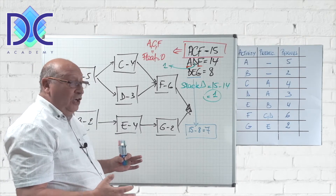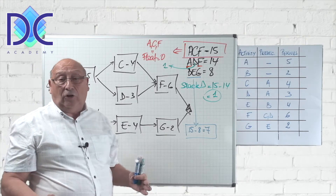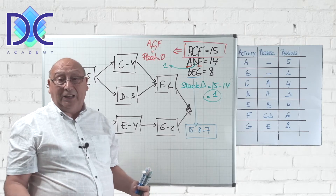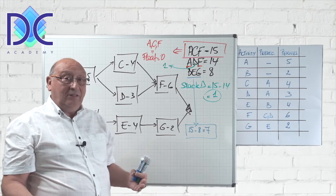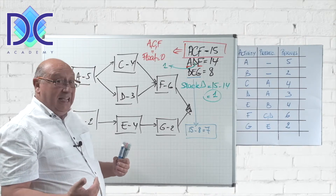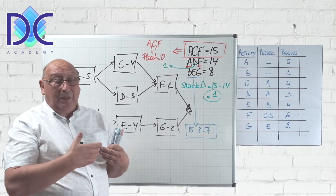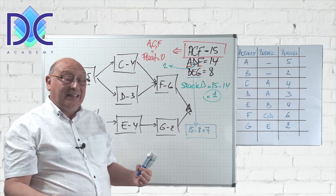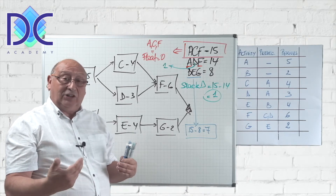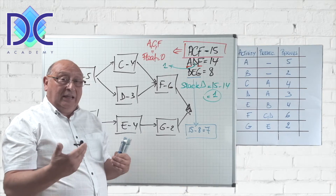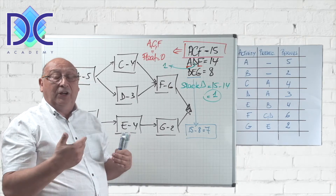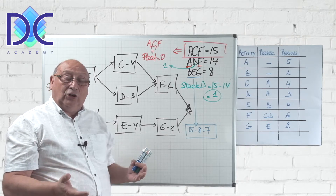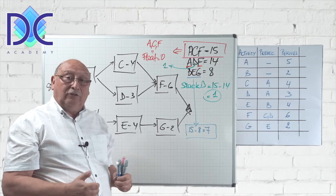To summarize the method: the critical path is the longest path through the network, and the slack of an activity is found by taking the duration of the path it is on and subtracting that from the length of the critical path. That gives you the slack of that activity.